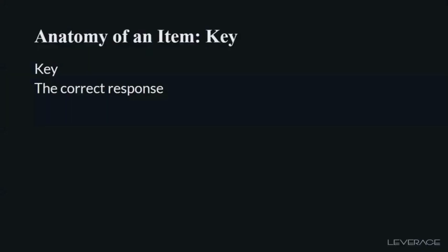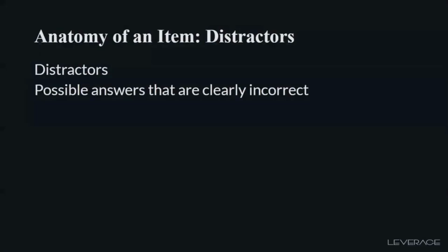The next part of a test item is what is referred to as the key. The key is simply the correct response. You have a list of options — also called alternatives — such as option A, option B, option C, option D, and as many options as you have the time and resources to include. All of these are referred to as options or alternatives. However, only one of them is supposed to be the correct response, and that one correct response is referred to as the key.